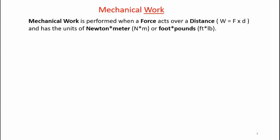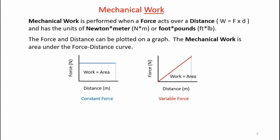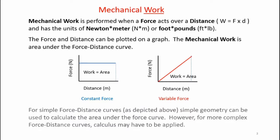Let's start off with a quick refresher on mechanical work and mechanical energy. Mechanical work is performed when a force acts over a distance, or W is equal to F times D. The units of mechanical work are Newton meters or foot-pounds. The force and distance can be plotted on a graph — mechanical work is the area under the force-distance curve. The graphs have the vertical axis of force in Newtons and the horizontal axis distance in meters. If I take the area, that's force times distance or Newtons times meters, so you see how the Newton meter units come out for work. For simple force-distance curves, simple geometry can be used to calculate the area under the curve.